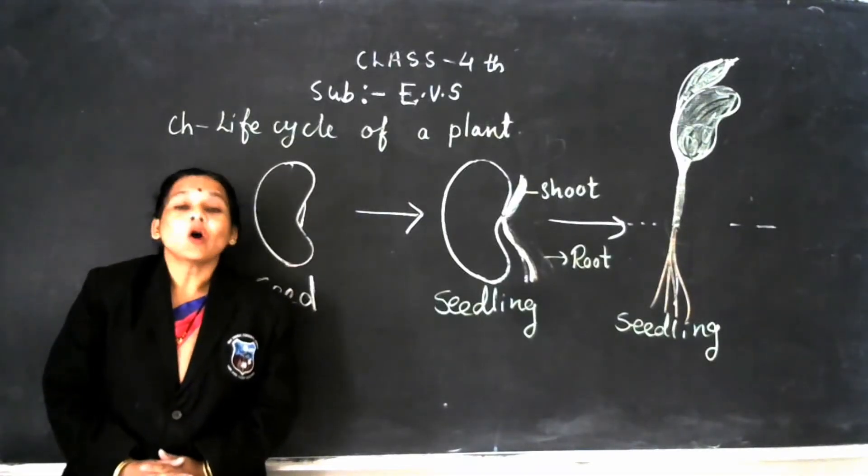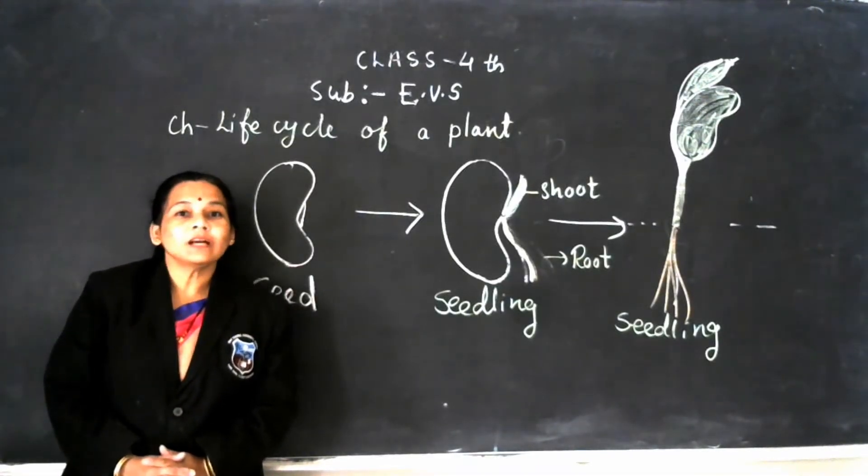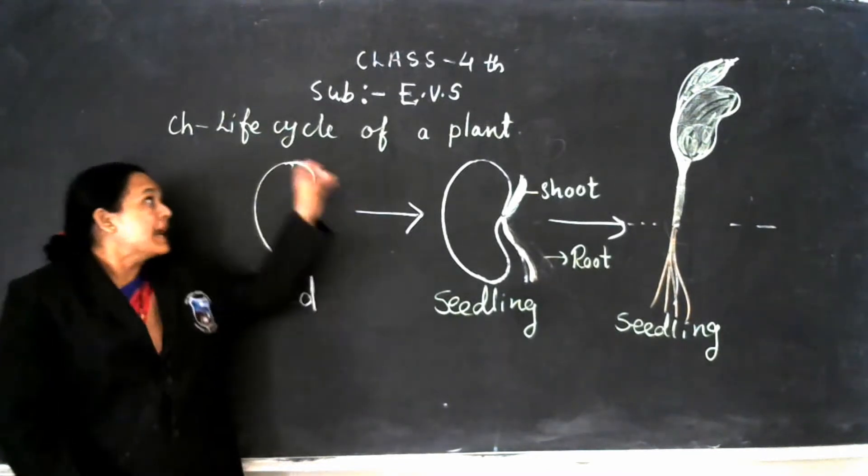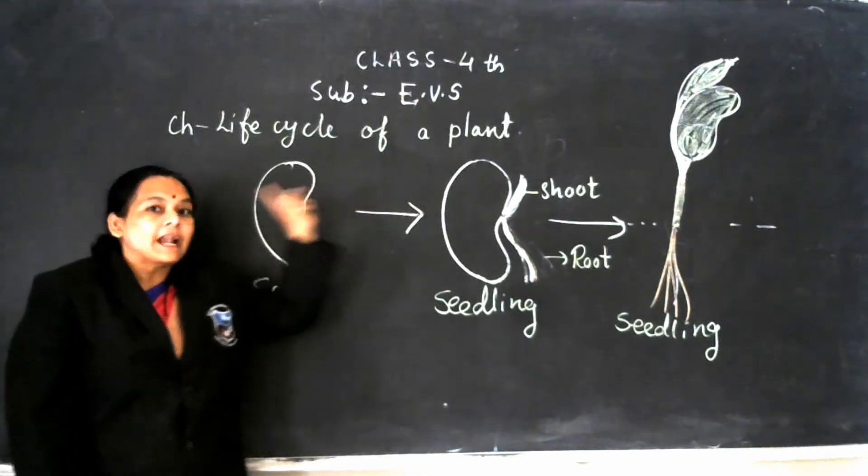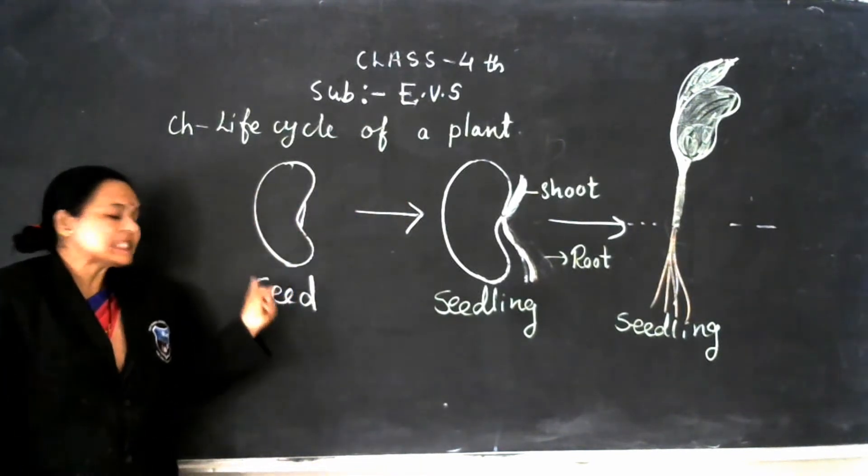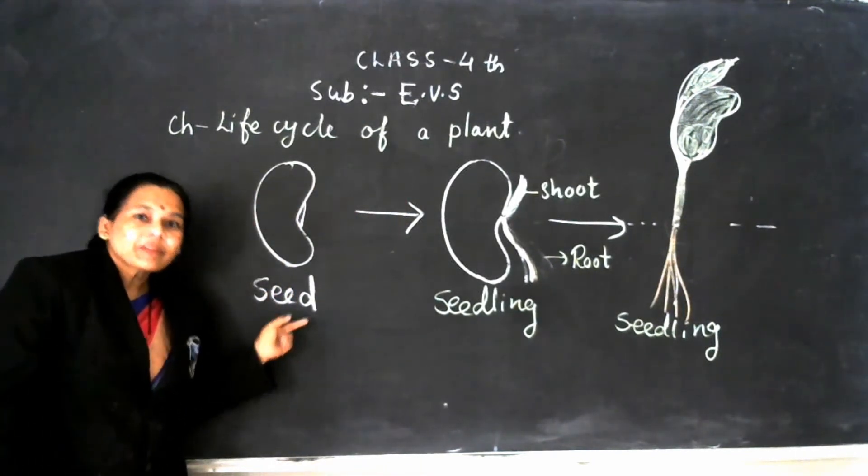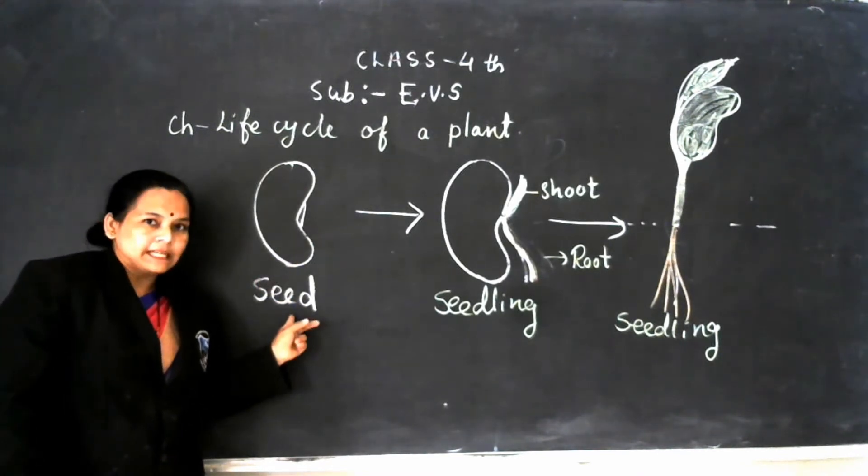All of you know that all living things have their own life cycle. Plants also have their own life cycle, and a plant's life cycle starts with seed. Every flowering plant gives seed.